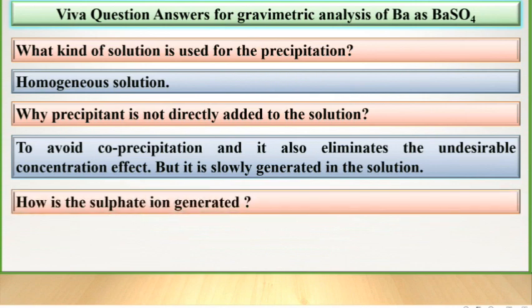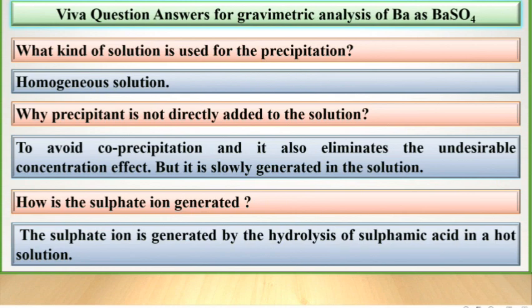How is the sulfate ion generated? The sulfate ion is generated by the hydrolysis of sulphamic acid in a hot solution.